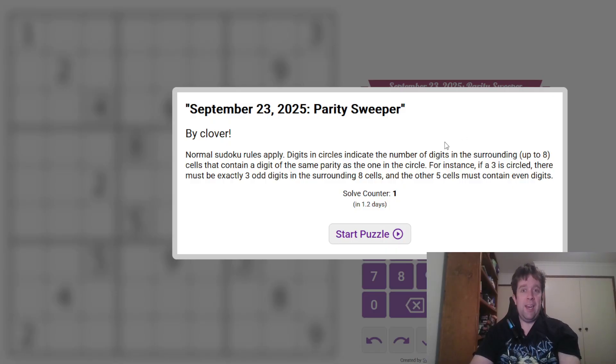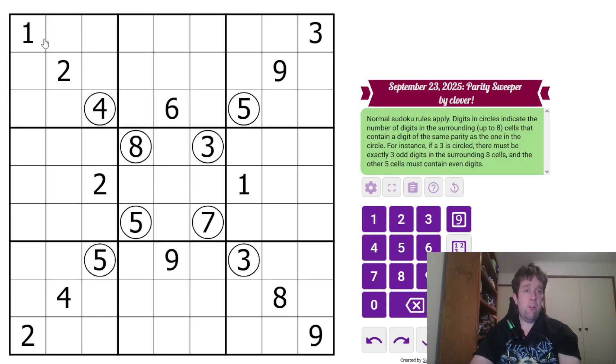That being said, I'm going to get into it now. Pardon me, this is a Parity Sweeper Sudoku. So what does that mean? Normal Sudoku rules of play. Each box, each row, I know what a column is, and each column must contain one to nine once each. And in the grid, we have cells. Now, these cells indicate that... So I've circled this five for example.